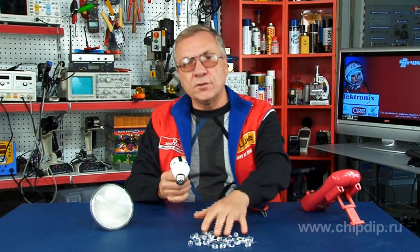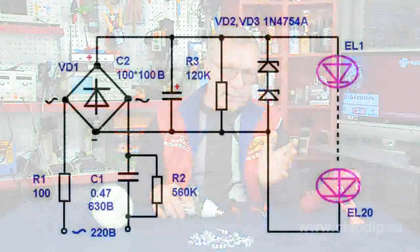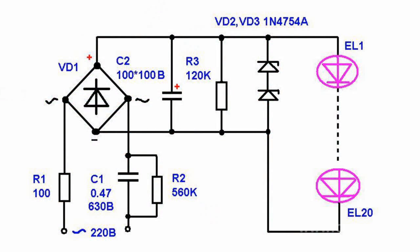Let me describe this power supply circuit in more detail. This circuit uses a bridge rectifier with a capacitive ballast that restricts the output current. This power supply is resistant to short circuits as the output current is restricted by the capacitive impedance of the capacitor. That's why such a power supply is often called a current regulator.